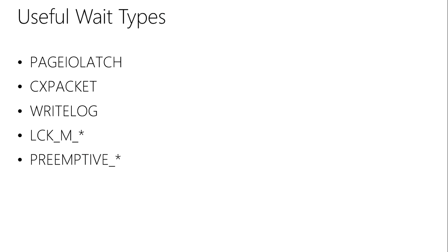Some useful wait types to understand: Page IO latch is a latch on a page in memory. Everything you do within SQL Server has to go into memory. SQL Server puts a latch on a page in memory — basically saying, I'm going to use this in a minute so nobody else use it while I go get the data to put into it. A page IO latch is a pure wait on reading data from disk into memory, so it's an indication of slow IO.